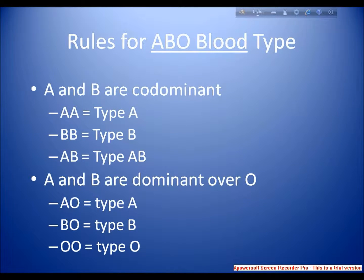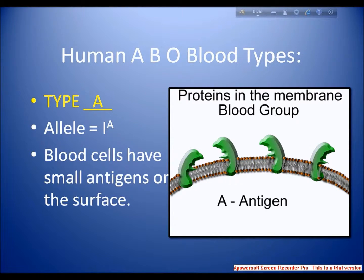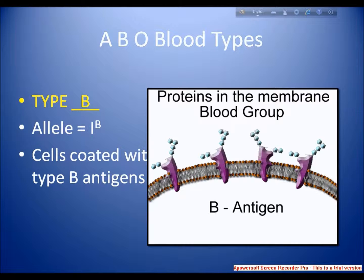The IA and IB alleles are responsible for the production of A and B antigens. The allele IA for the A antigen is co-dominant with the allele IB for the B antigen. The blood cells have small antigens on the surface. Type A cells have A antigen and B antibody. The type B allele phenotype — IB cells — are coated with type B antigens and have the presence of A antibody.